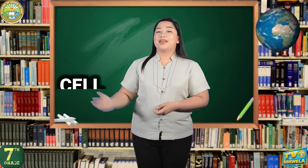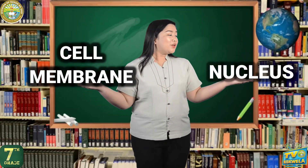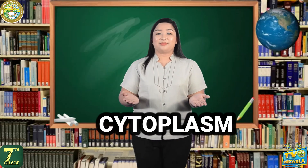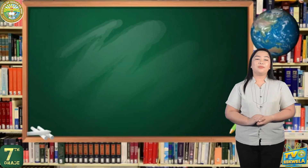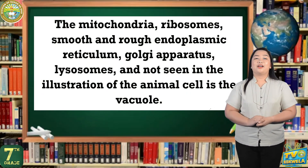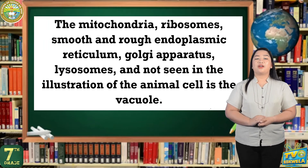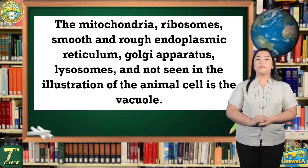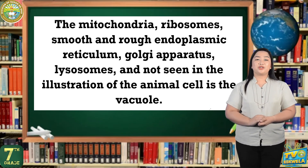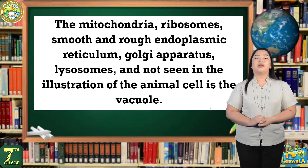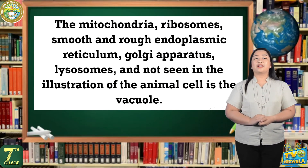As a recap, here are all the organelles we talked about. The three basic components of the cell are the cell membrane, nucleus, and cytoplasm. Within the cytoplasm are the organelles: the mitochondria, ribosomes, smooth and rough endoplasmic reticulum, Golgi apparatus, lysosomes, and — not seen in the illustration of the animal cell — the vacuole. Those are the basic organelles of the cell.